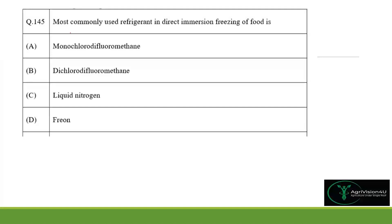Question 145 asks for the most commonly used refrigerant in direct immersion freezing of fluids. While freon, dichlorofluoromethane, and monochlorofluoromethane are all refrigerants, the most commonly used for direct immersion freezing — which freezes food instantly — is liquid nitrogen. Option C is the right answer.